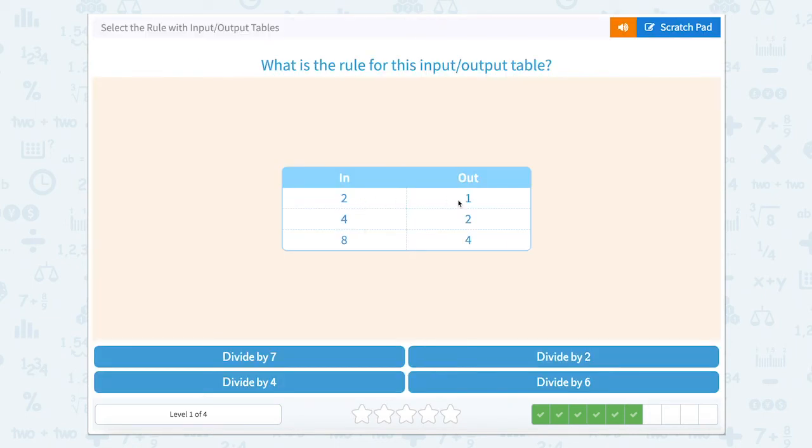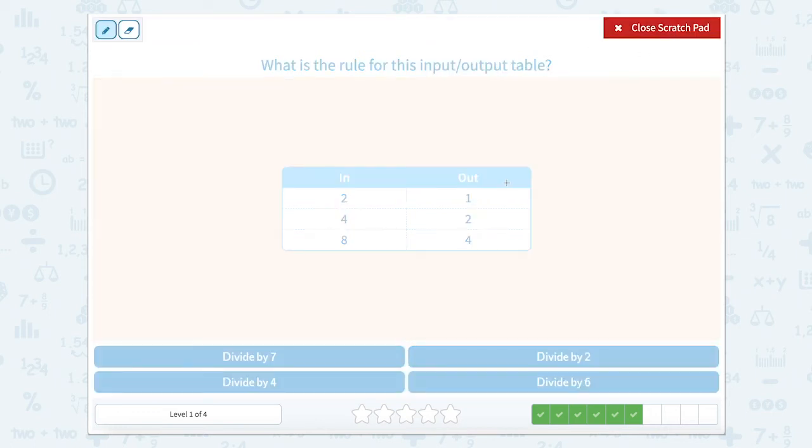All right. These ones are a little bit different, so we're going to have to use our brains a little bit. We're going from 2 to 1, 4 to 2, and 8 to 4. Wow. So we need to figure out what we're dividing by to get these numbers.